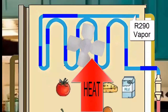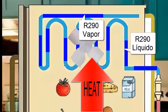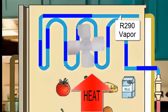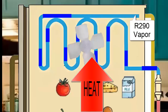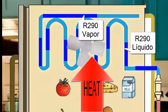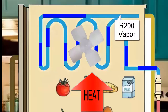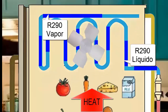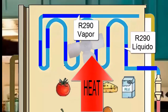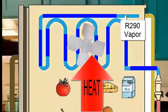The heat from the products transfers to the R290 refrigerant in the evaporator, causing the refrigerant to progressively change from a liquid to a gaseous state. The R290, now in a gaseous state and with a slight increase in temperature called superheating, is suctioned by the compressor.